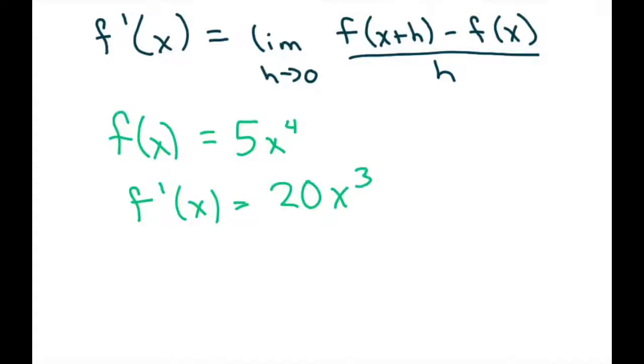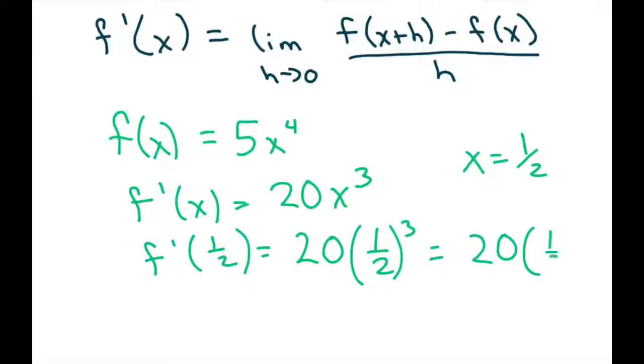And then we just have to evaluate at x equals 1 half. So f prime of 1 half equals 20 times 1 half cubed, which is 20 times 1 eighth or 20 eighths, which can reduce to 5 halves.